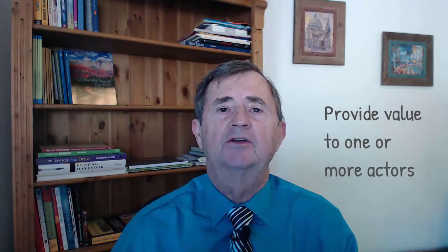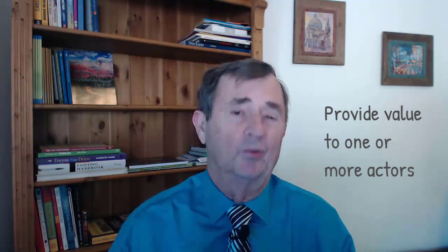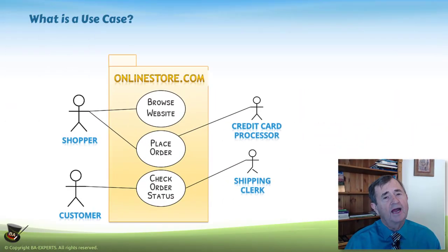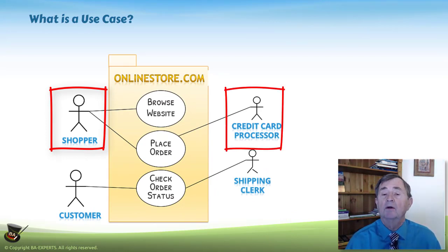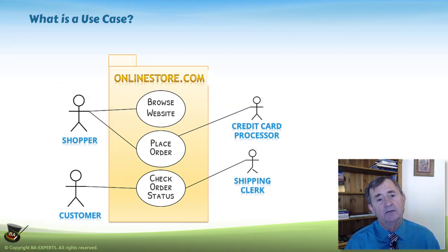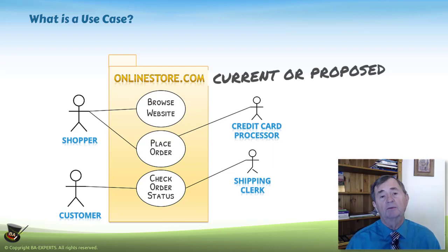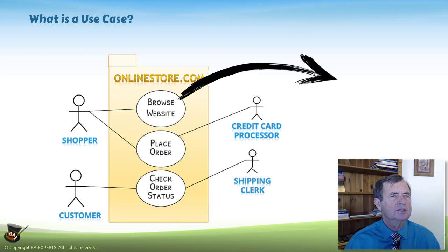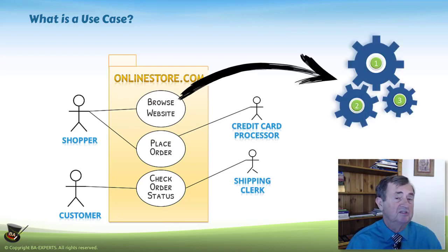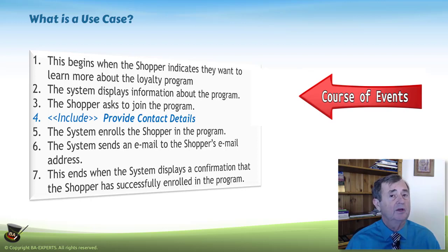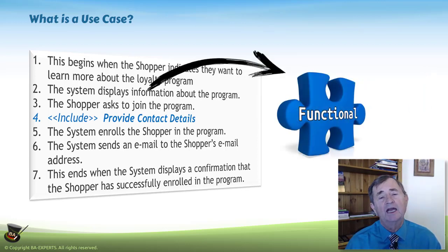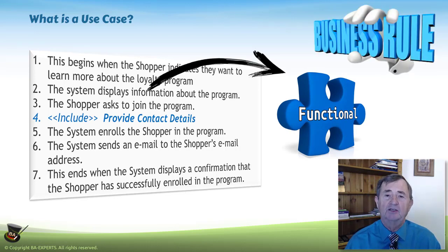Typically the initiating actor is going to get the most value out of the use case, although that's not always true — that's just the most common component. It shows the interaction between actors, which may be people or technology. An actor can be a person, a device, or another application — an API in the world of the web. It can be a current or proposed application or interaction, but its purpose is to handle the event in the manner that the business community dictates as appropriate. It shows the sequence of functional steps that are going to take place — the course of events that has to happen in order to handle the event or request from when it is received until the desired business outcome has been achieved. So it contains functional requirements and business rules on how we want this application to handle the situation.